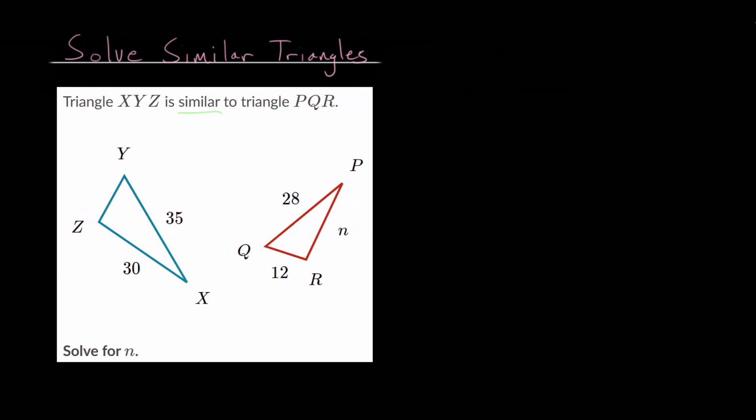If we set up ratios, looking at corresponding sides, we can figure out what that proportionality constant is. So let's start with the largest side in each of these triangles. And we can take 35 and compare it to 28. We're just comparing the largest side in each of these triangles.